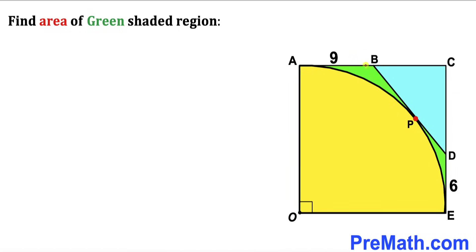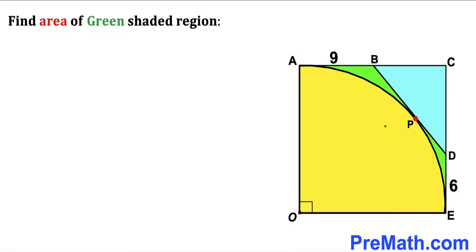Welcome to pre-math. In this video we have a green shaded region fully confined inside square OACE, where line segment AB is 9 units and line segment DE is 6 units. The green region is restricted between a yellow quarter circle and a blue right triangle, and point P is the point of tangency. Our task is to calculate the area of this green shaded region.